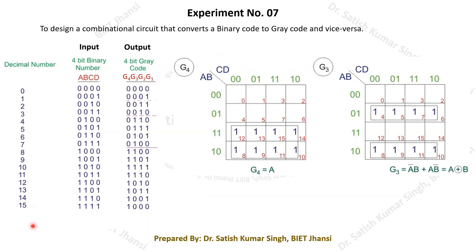You can see in this truth table we have decimal numbers 0 to 15. The equivalent binary representation uses four bits, denoted here as A, B, C, D. With these four bits we can have 16 combinations that represent all decimal numbers from 0 to 15.